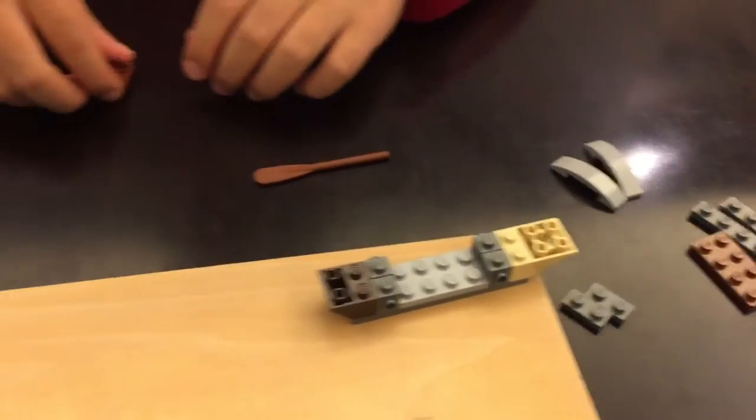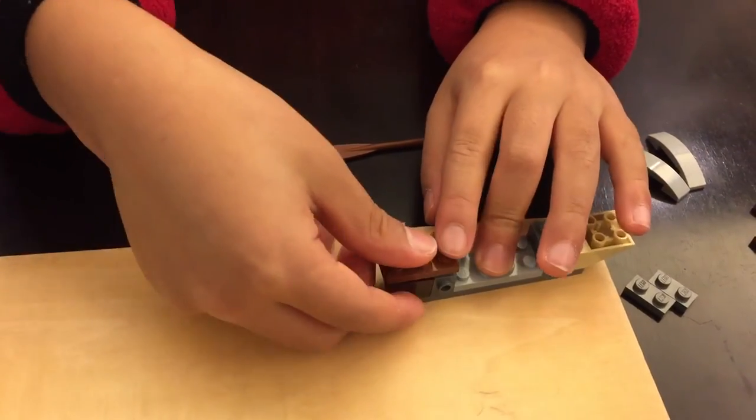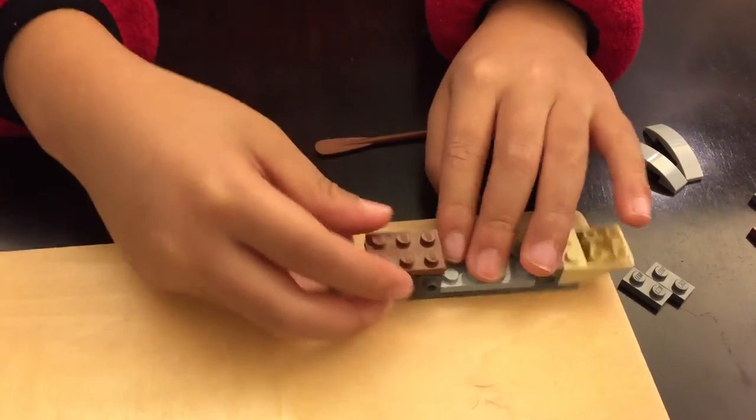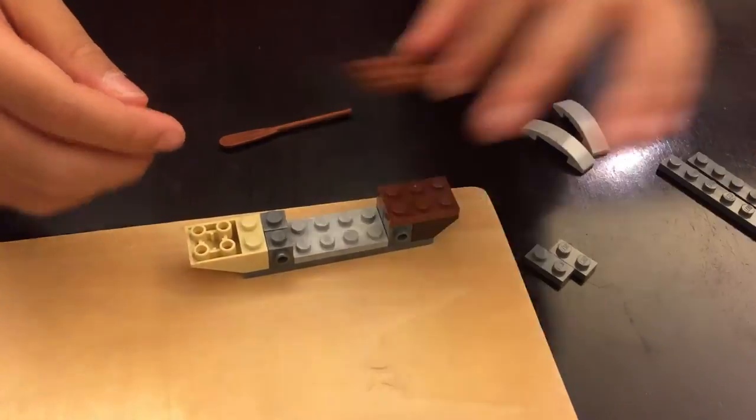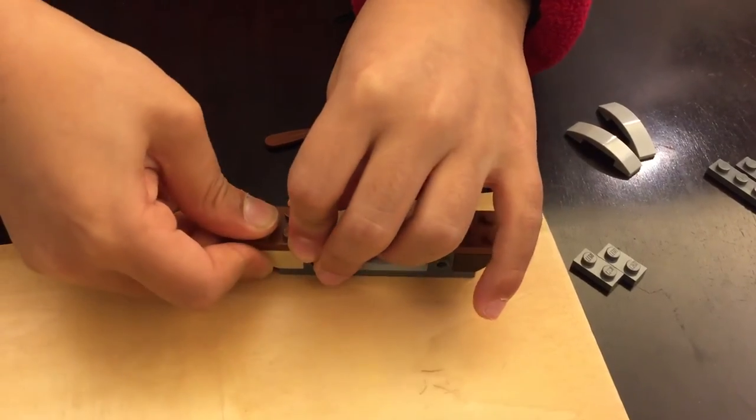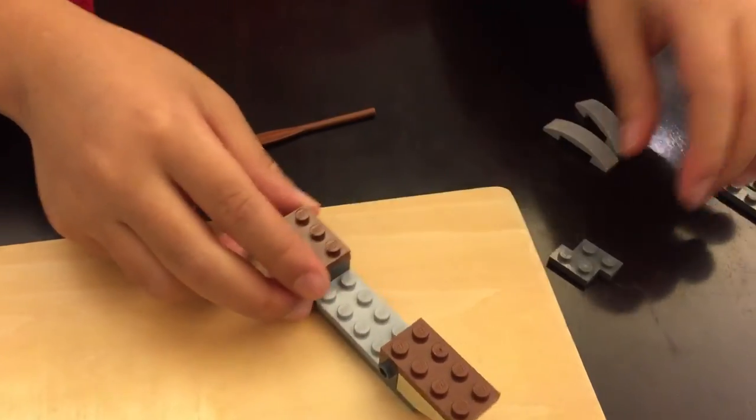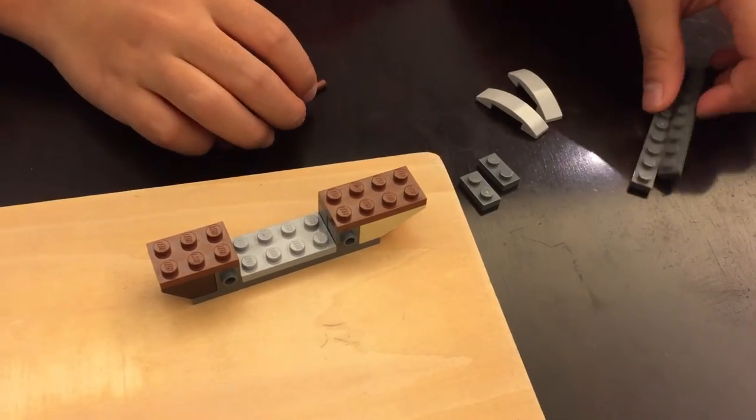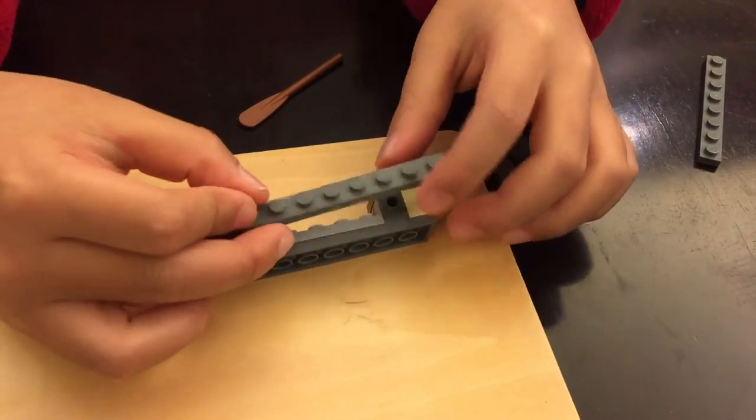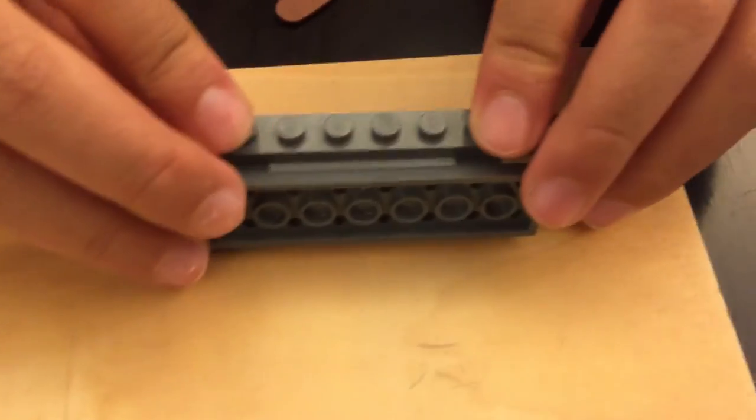Now this 6-studded one you will press down on top here. On the other side you will put it there, and on the other side you will put the 8-studded block. Then you will get these pieces and put them on the side of the canoe.